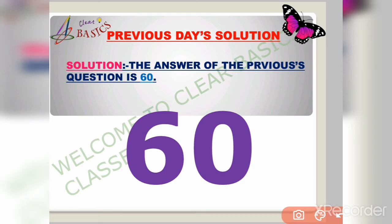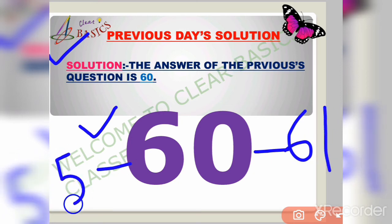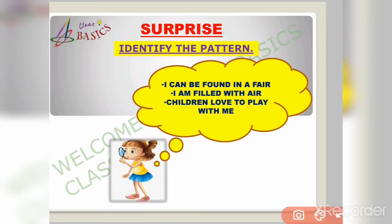Now it's time to discuss the answer of the previous day's surprise question. Check your answer, friends. The answer is 60. It is a two-digit number. It comes before 61 and after 59. I hope you all answered it correctly. Now it's time to reveal today's surprise question.